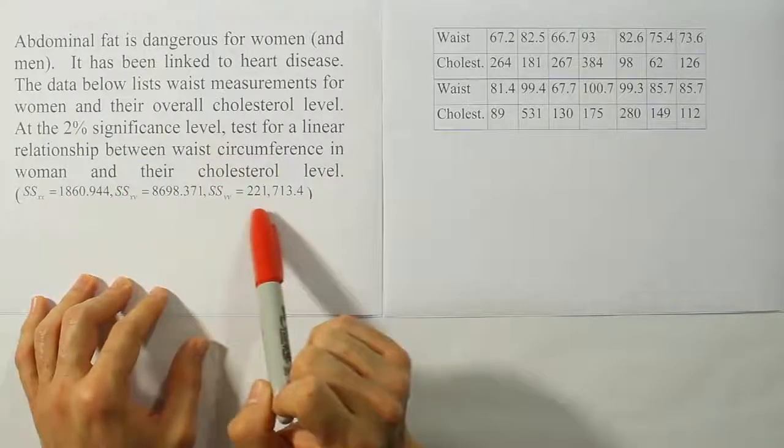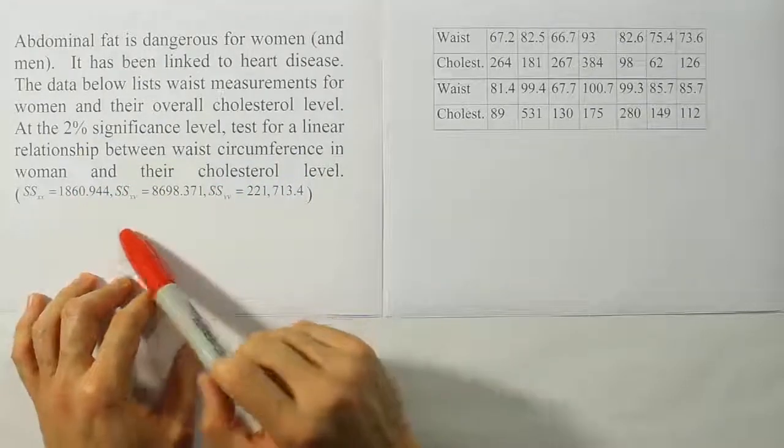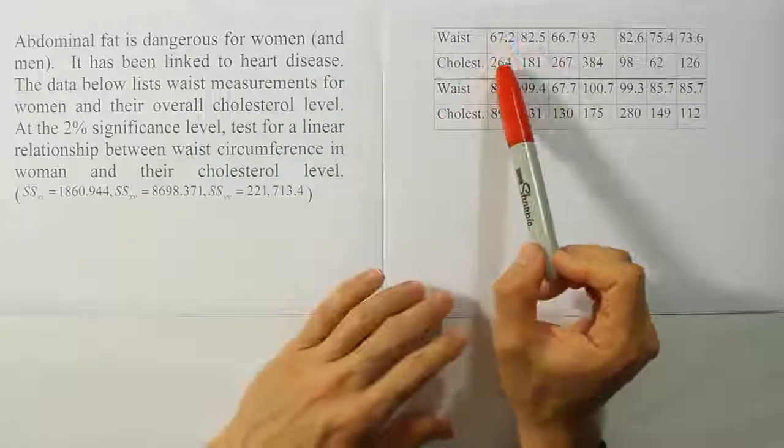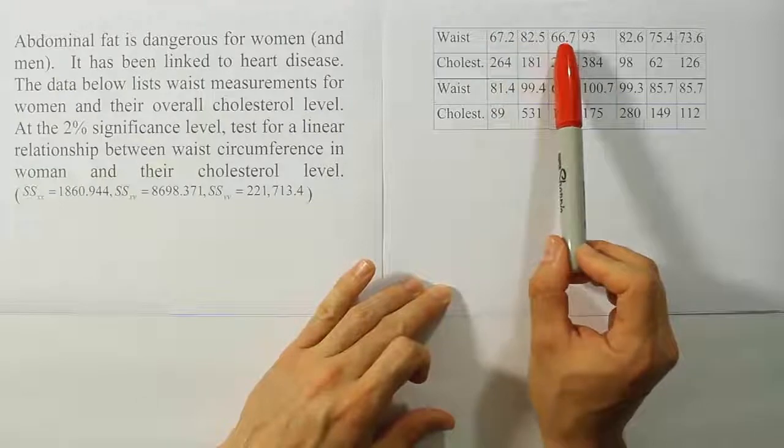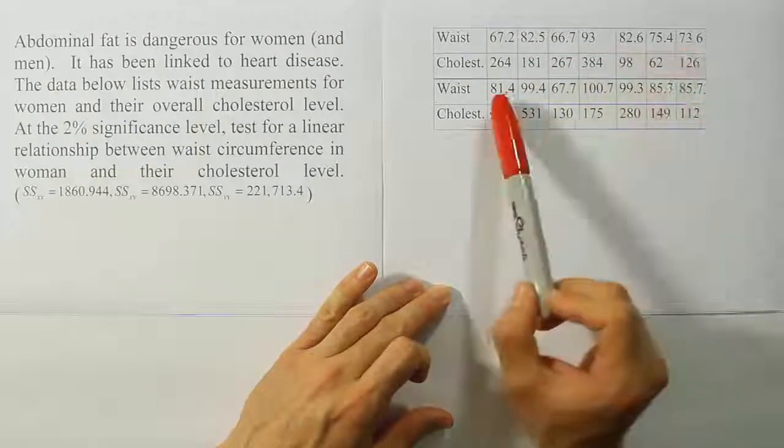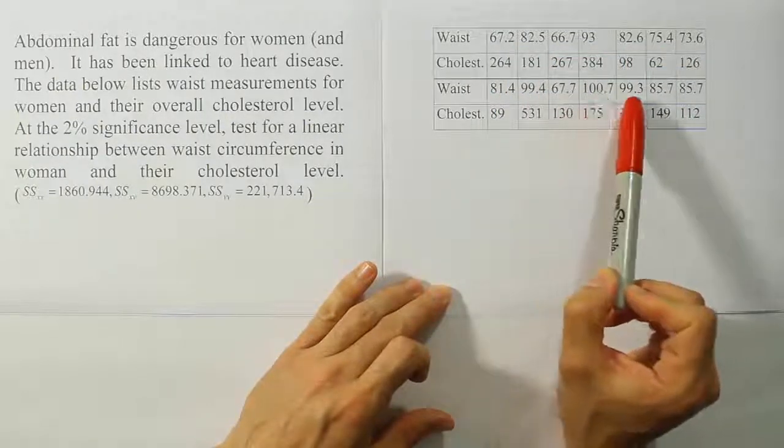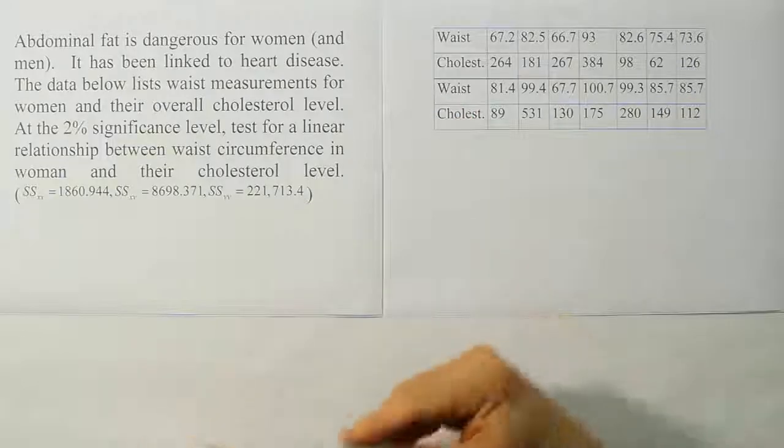We have the sum of square values included at the bottom here. That's really helpful. We can count to see how many ordered pairs of data we have for the problem so we know what our N is. Counting through the data points, we have 1, 2, 3, 4, 5, 6, 7, 8, 9, 10, 11, 12, 13, 14. So N is 14 for this problem.